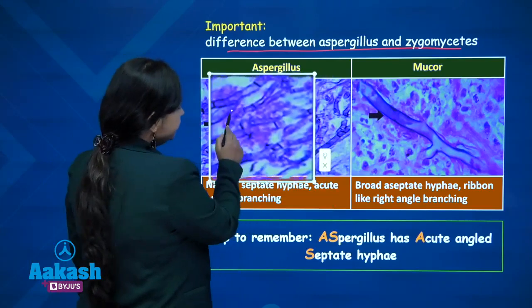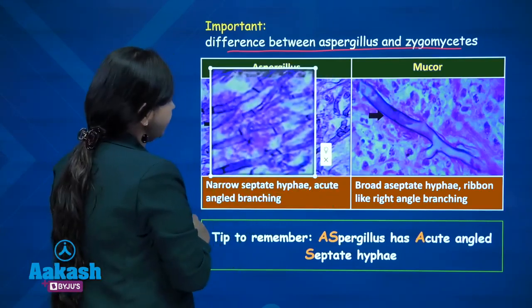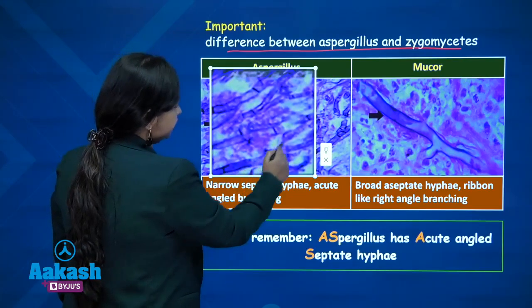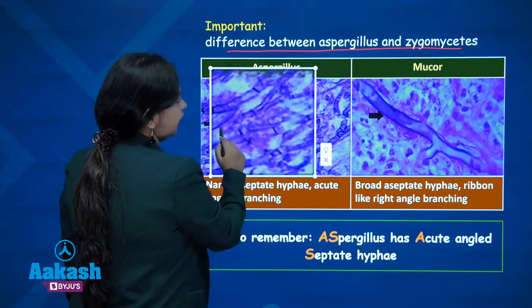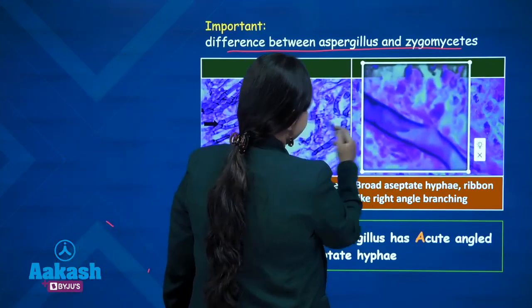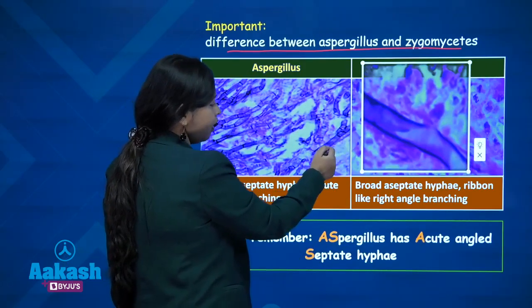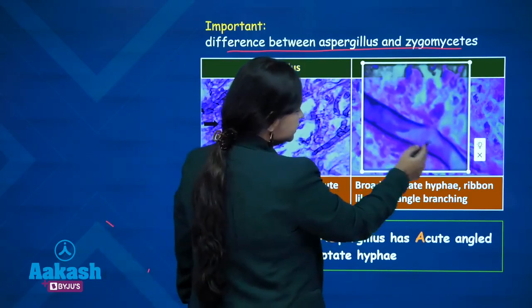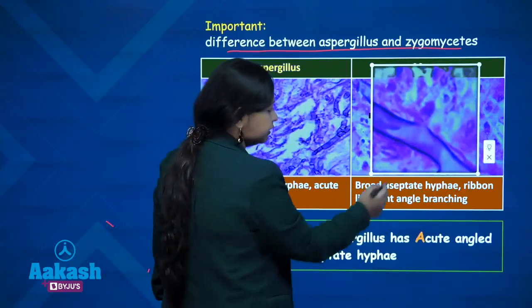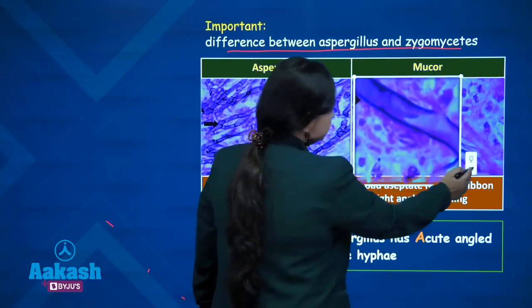In aspergillus there are narrow septate hyphae with acute angle branching. You can see these hyphae are septate and there is acute angle branching, whereas in mucor there are broad hyphae. You can appreciate the difference between the narrow hyphae and the broad hyphae — these look ribbon-like, right angled, and there are no septa in mucor.